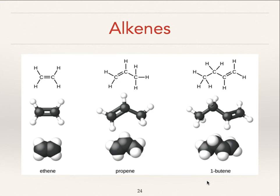Instead of pentane you'd have pentene, hexane becomes hexene, and so forth. Another difference is that the generic formula for alkanes was CnH2n+2. The generic formula for alkenes is CnH2n, and you can see that's the case.